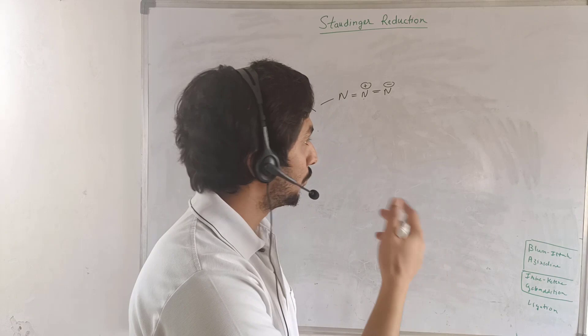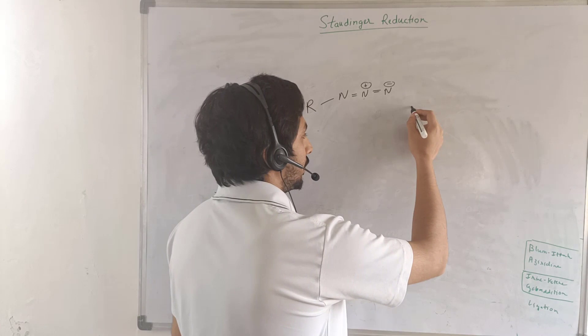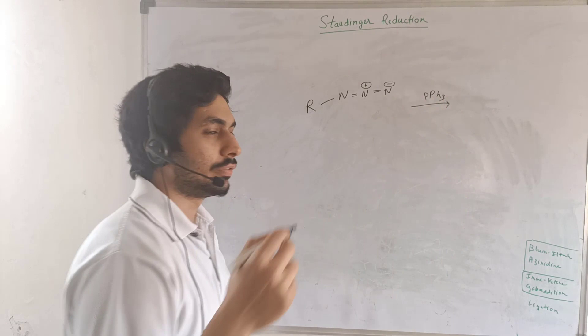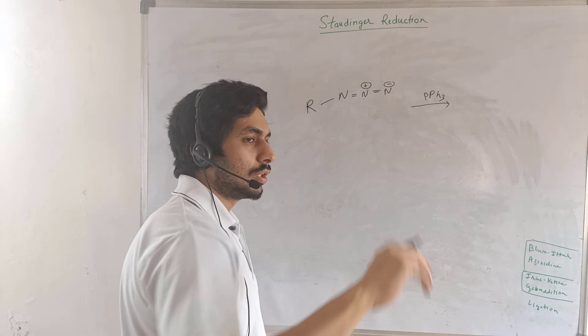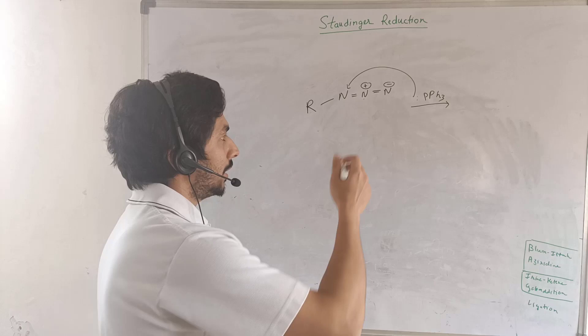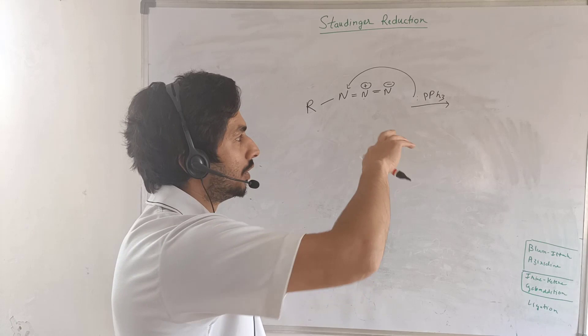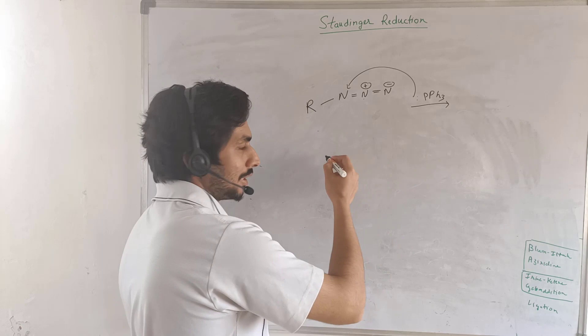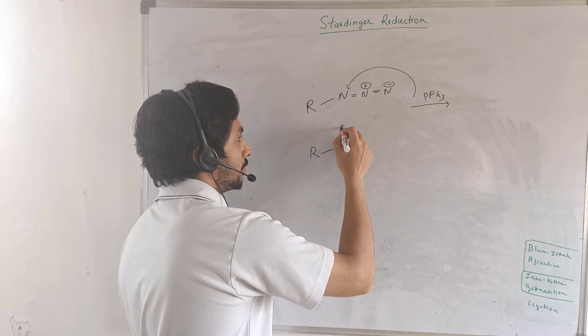Rather than showing you the transformation directly, I'll show you the mechanism. You add triphenylphosphine. Now this nitrogen in the azide is somewhat electropositive — it has a delta positive charge. What is going to happen is that this phosphorus will react on this nitrogen. Once it does that, these pi electrons will move to this nitrogen — because nitrogen is positively charged — and this will satisfy the charge on this nitrogen. So in the next step, we have R-N with the triphenylphosphine attached, and then we have a double bond N-minus.